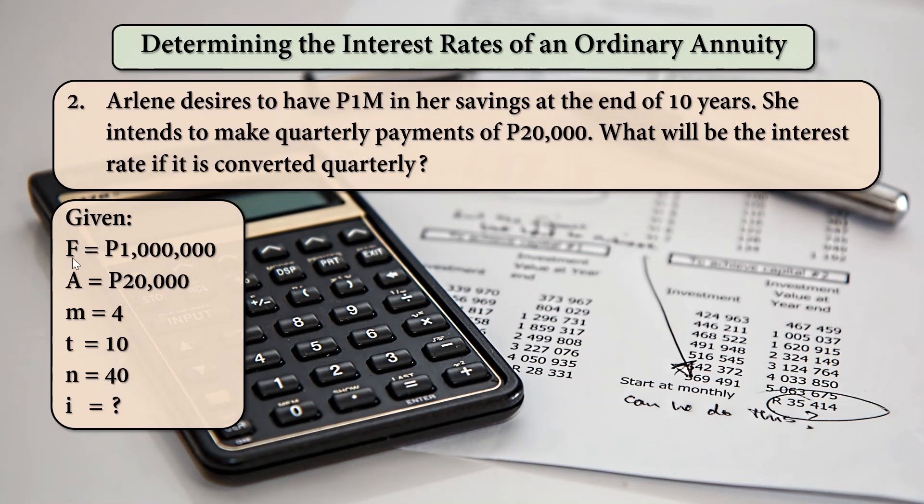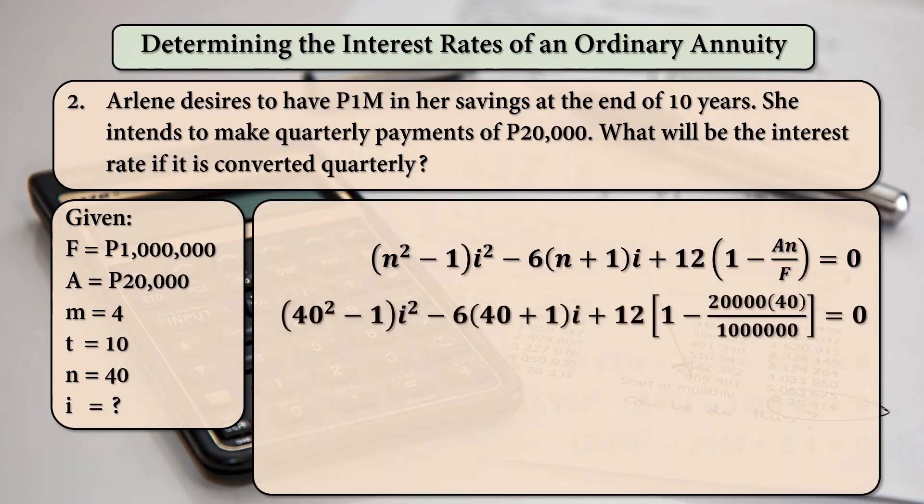And so, since F is given, we are going to use the second equation. And so, we are going to substitute for the values of N, the values of A, and then our F in the denominator here. So, 40 squared is equal to 1,600. 40 plus 1 is 41. And this quantity will be equal to 0.8.